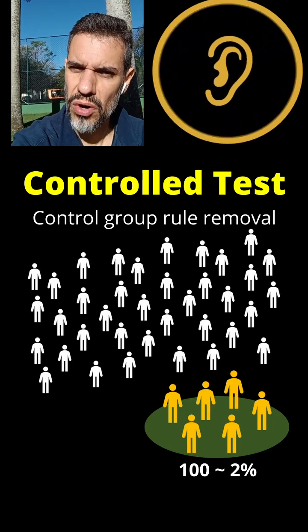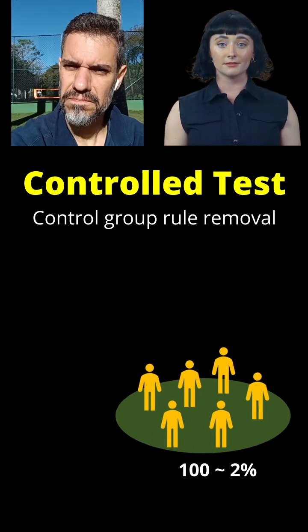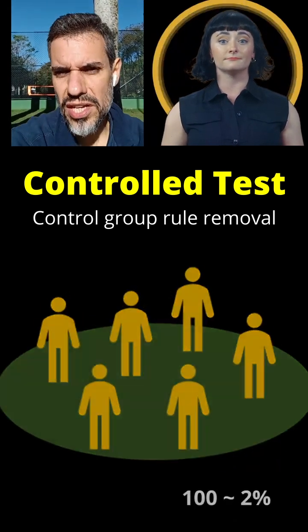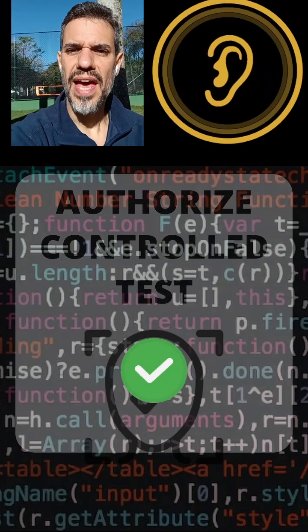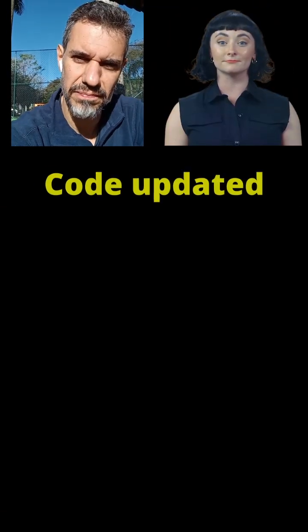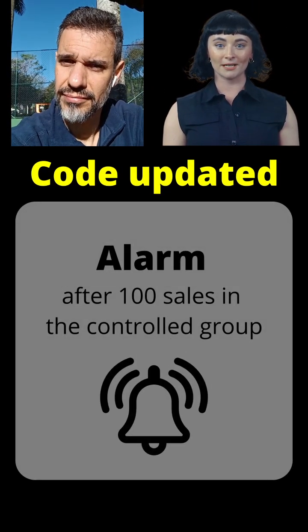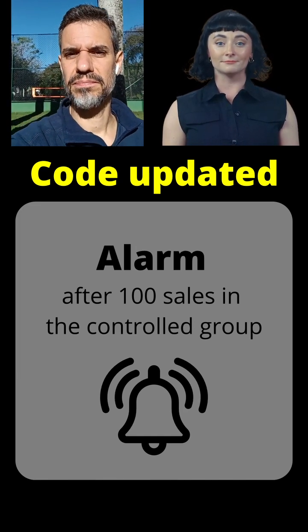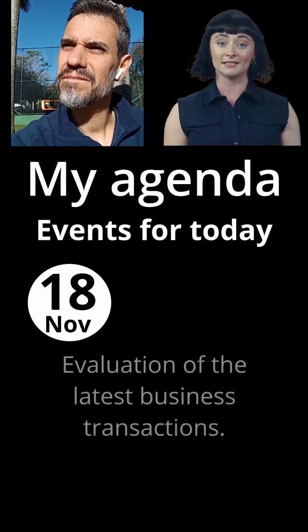Do I have authority to make the change in a limited volume control group? Yes. Can you make this change in the code? Yes — would you like me to do it now? Yes please, and set an alarm to notify me of the result as soon as the first 100 purchases are made. Done — the change has been made and the alarm is set to notify you of the results after the first 100 purchases.